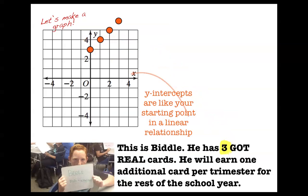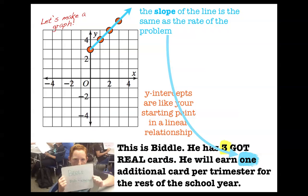Okay. What about the slope of this linear relationship? The slope of this line, it goes up 1 over 1, up 1 over 1. The slope is 1, because he's earning 1 additional card per trimester. That's the rate, and it's the slope. The m equals 1, and the b equals 3. So we could take any linear relationship, and we can find an m-value and a b-value by finding the slope, which is the rate, and by finding the y-intercept, which is the initial value.